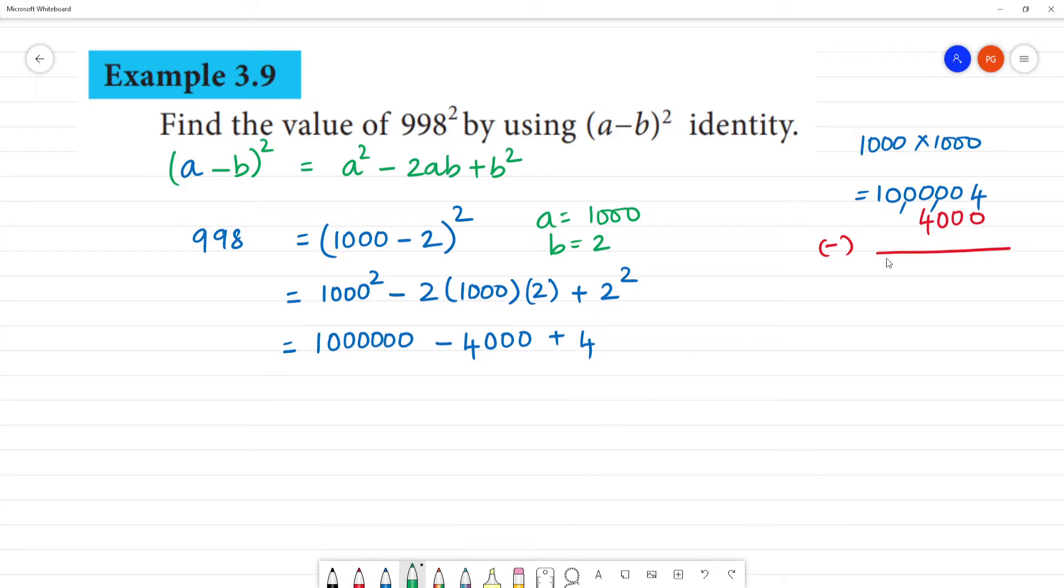We have to answer: 4 minus 0 is 4. Here is 0, here is 0. This will be 10, here is 9. So, 10 minus 4 is 6. We have to answer 9, 9. So, what is the answer? 996,004.